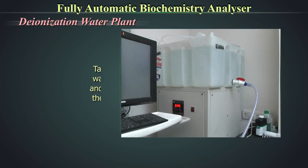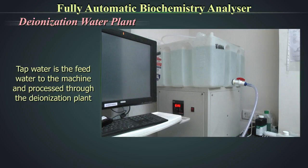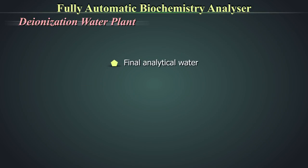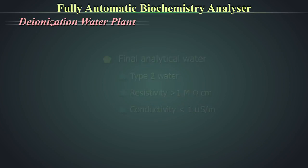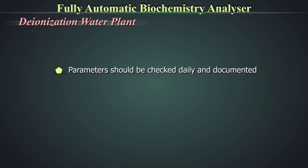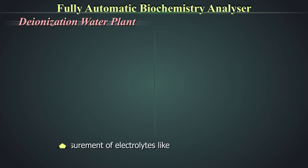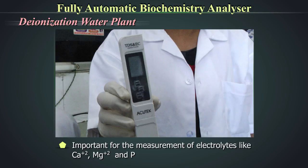The deionization water plant processes tap water as feed water. The final analytical water is Type 2 water with resistivity more than 1 and conductivity less than 1 siemen per meter as per the American Society for Testing and Materials. These two parameters should be checked daily and documented. If using commercially purchased deionized water, conductivity and resistivity can be checked by a handheld device. This is very important for the measurement of certain electrolytes like calcium, magnesium, and phosphorus.